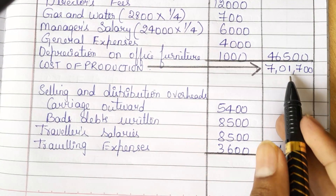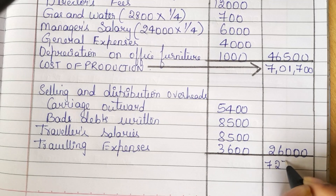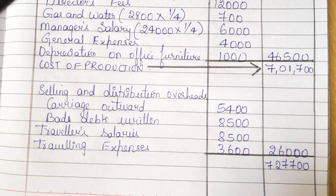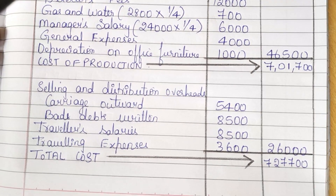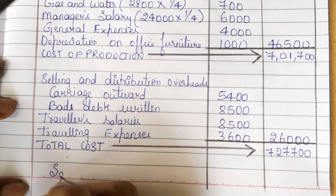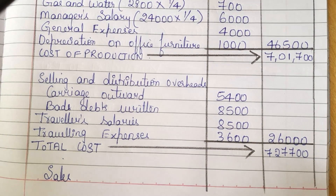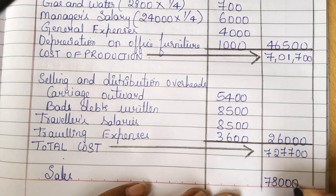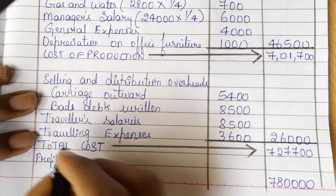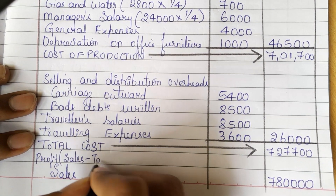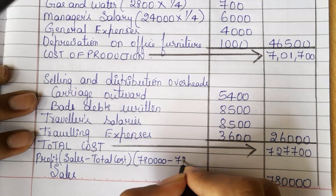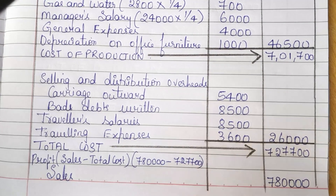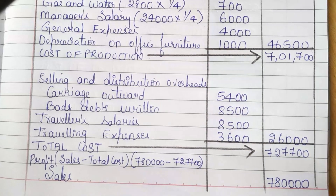Adding 7,01,700 plus 26,000, you will get 7,27,700. This is our total cost. We know the value of sales: 7,80,000. To find the profit, sales 7,80,000 minus total cost 7,27,700 — subtracting, we will get 52,300. This is our profit.